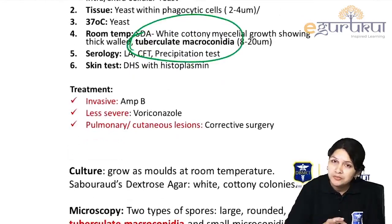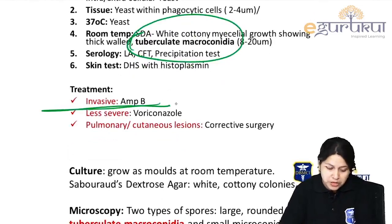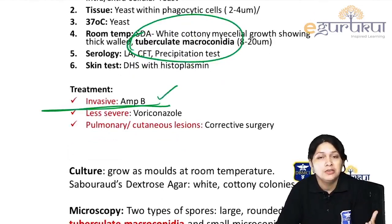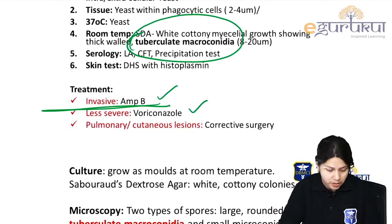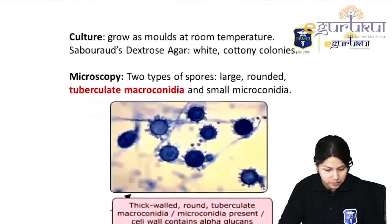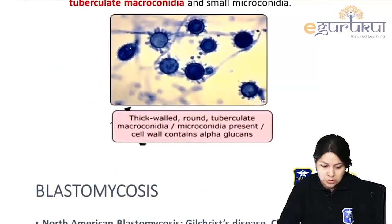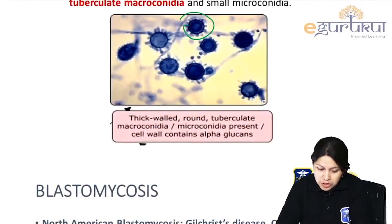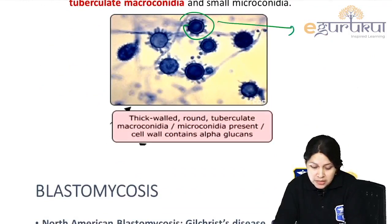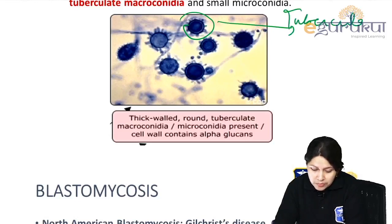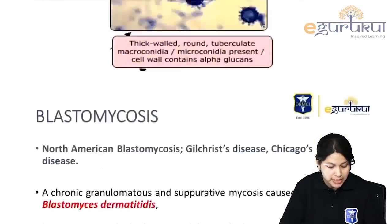For all severe infections, we use amphotericin B or other azoles like voriconazole. The macroconidia have projections on their surface, termed tuberculate macroconidia, classically seen in Histoplasma.